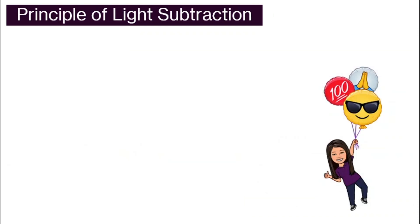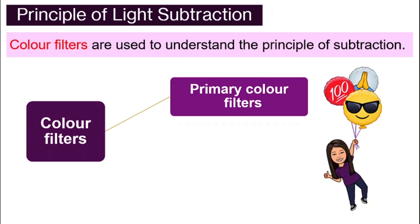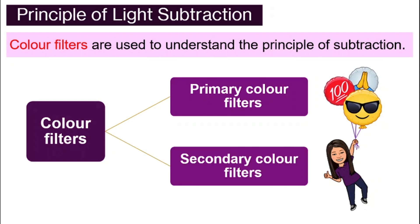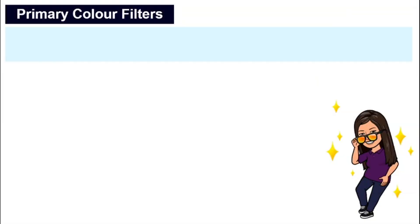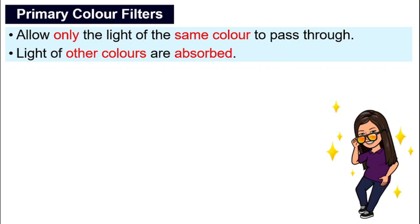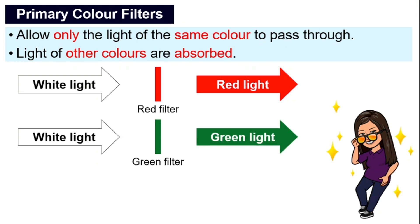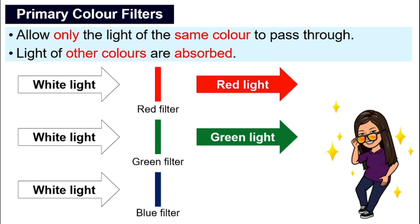The principle of light subtraction can also be understood by using color filters. Just like colored lights, colored filters can also be divided into primary color filters and secondary color filters. For primary color filters, they only allow the light of the same color to pass through, and the light of other colors is absorbed. For example, a red filter will only allow red light from white light to pass through; a green filter only allows green light; and a blue filter only allows blue light.